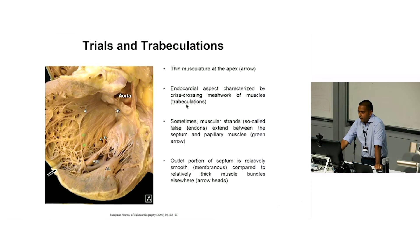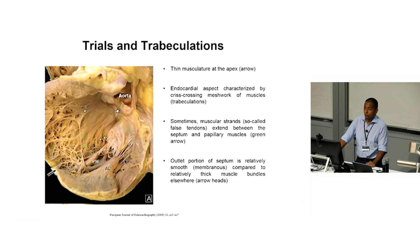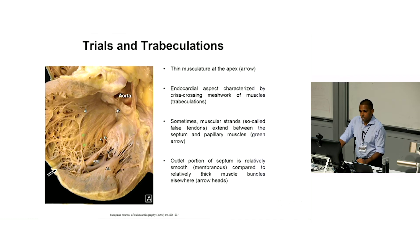The endocardial aspect of the LV is characterized by trabeculations throughout, and the apex can become very thin — around five millimetres or less. Sometimes you have muscular strands called false tendons on echo, which extend from the septum to the papillary muscles, analogous to the moderator band seen in the RV. The outlet portion of the septum is relatively smooth compared to the rest, and you can also see quite thick muscular bundles that can give the appearance of increased trabeculation — it's just embryological variation between people.